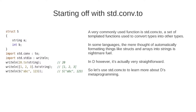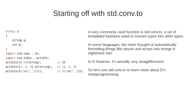We'll be starting off with talking about std.conv.to. This is a very commonly used function used to convert types into other types. In some languages the mere thought of automatically formatting things like structs and arrays into strings is nightmare fuel. This is because you usually need to have boilerplate or just do things manually. In D however, it's actually very straightforward. So let's use std.conv.to to learn more about D's metaprogramming.